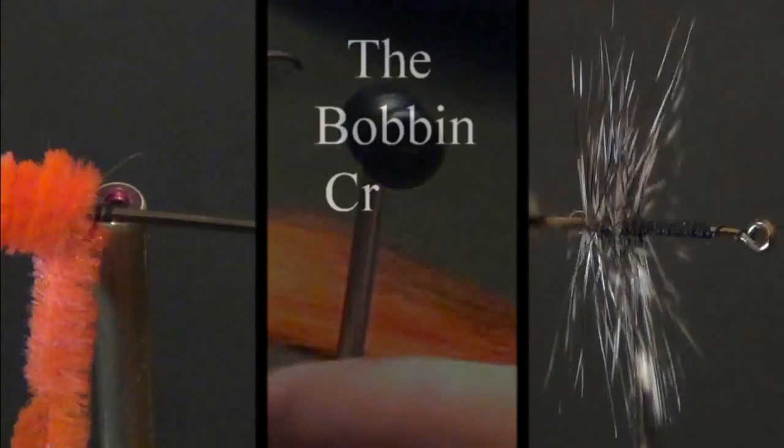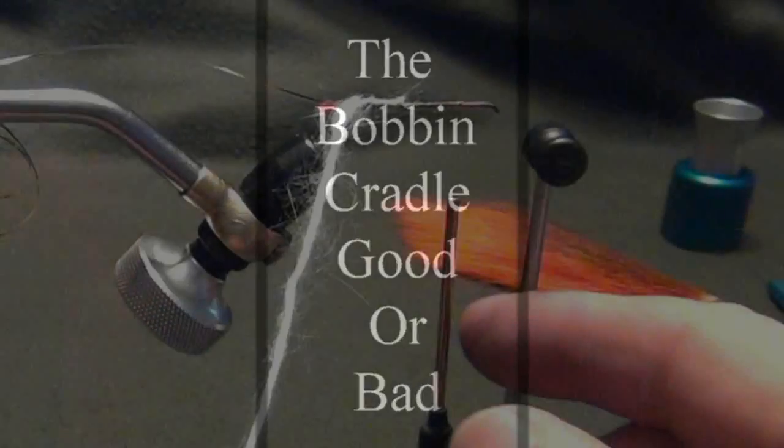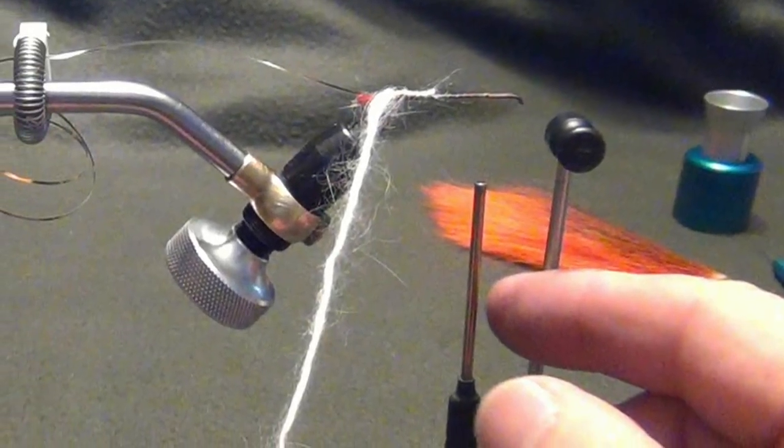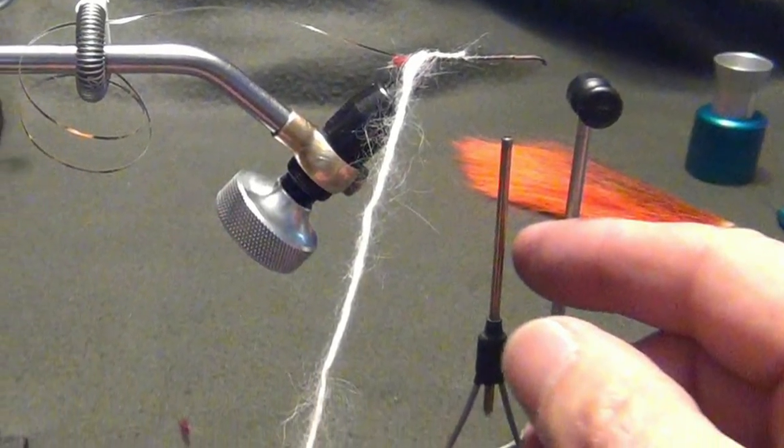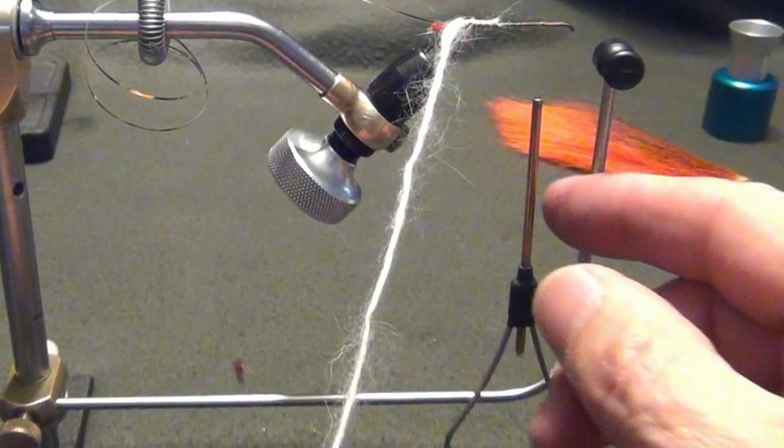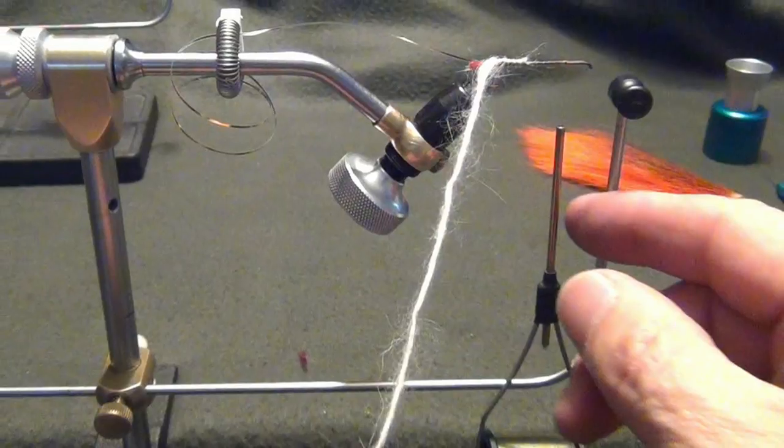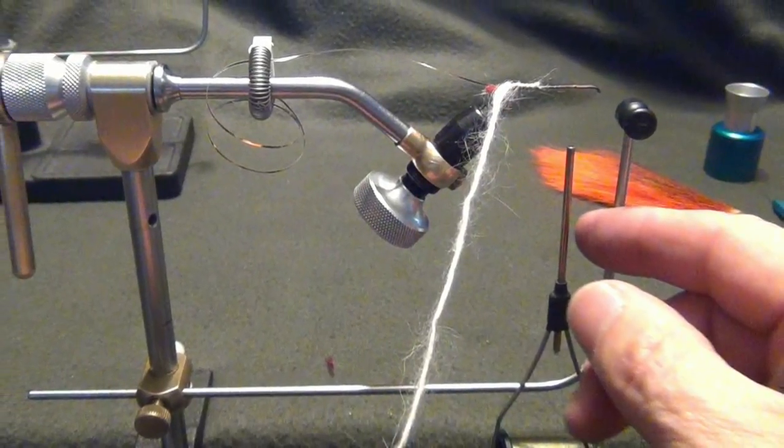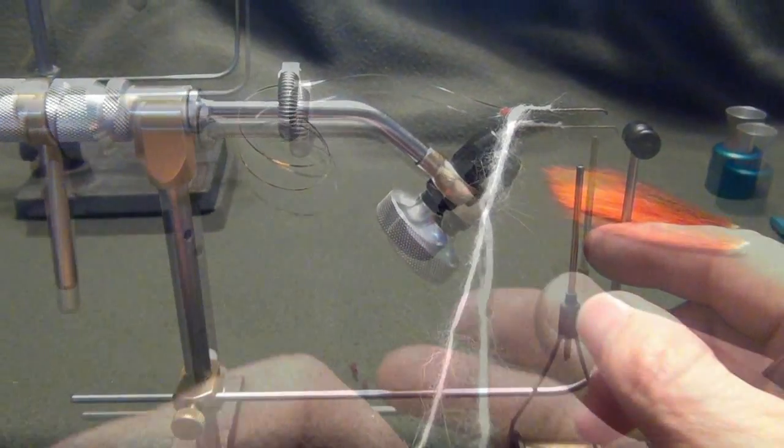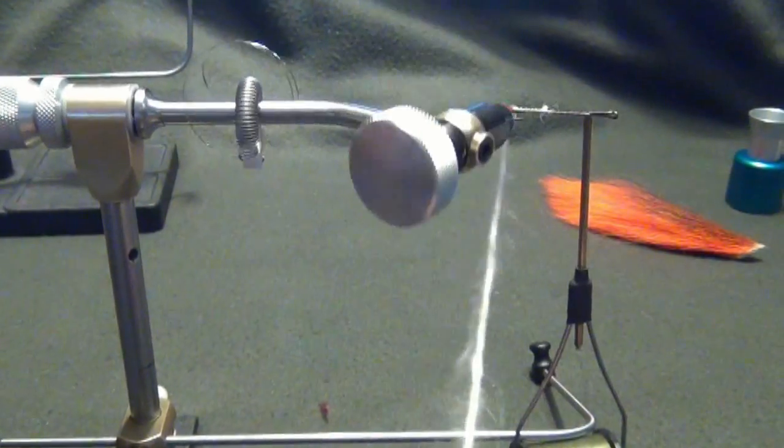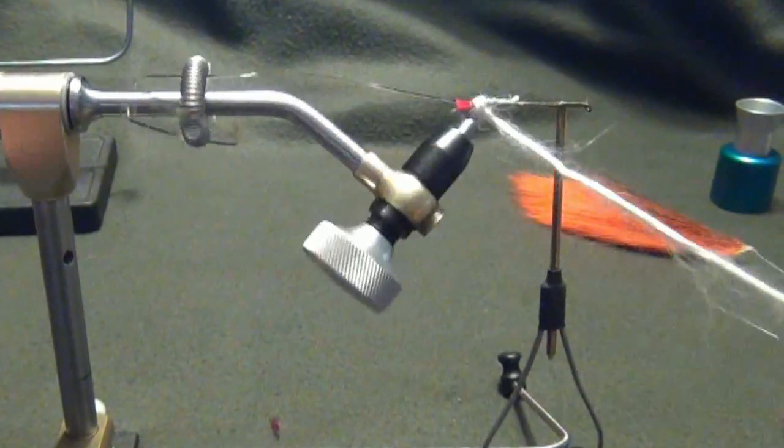The bobbin cradle is a misunderstood piece of gear if there ever was one. Most people are pretty sure it's out there to hold thread out of the way, but while it's holding the thread out of the way, the bobbin cradle is in the way. So as you can guess, people often wonder why that bobbin cradle came with the vise. Here's what the bobbin cradle can do for you.